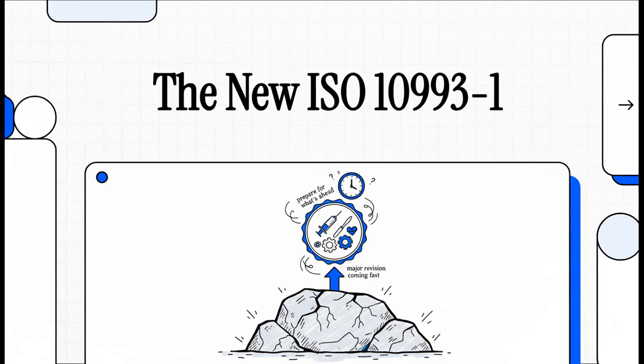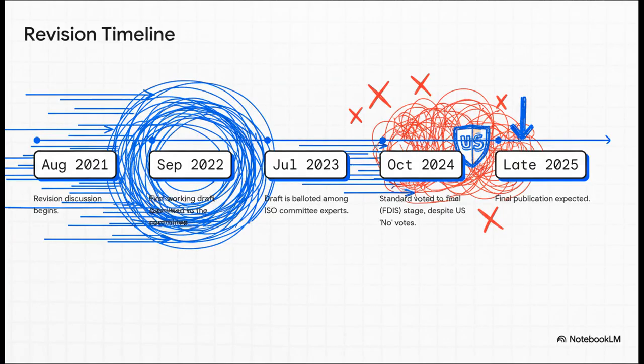So if you're in the medical device world, you know that ISO 1093-1 is pretty much the bedrock of biological safety. Well, get ready because that bedrock is shifting. A huge and frankly pretty controversial revision is on its way, and it's coming a lot faster than you might think. We're going to get you ready for what's ahead. Just take a look at the speed of this thing. Going from a first draft in late 2022 to an expected publication in 2025, that is lightning fast for a standard this critical.